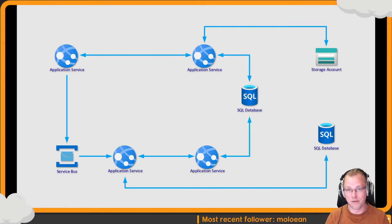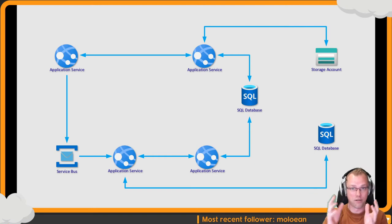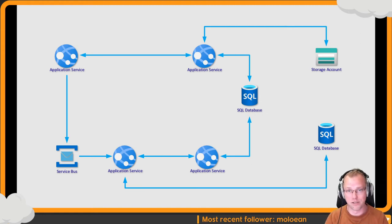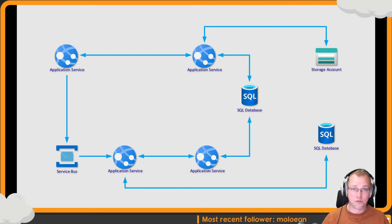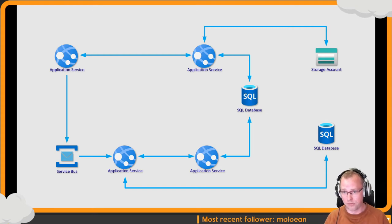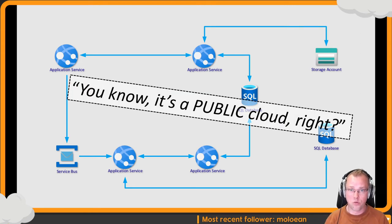I'm not very happy with this kind of design because it's what I call a 'distributed ball of mud' — you can look it up on Wikipedia, it's an actual thing. Instead of having classes calling other classes in your own process, you now have services calling services over HTTP, which is slower than having multiple objects in memory. And when customers show me this picture, the first thing I ask is: do you know Azure is a public cloud? If you haven't done something to secure your services, everyone will be able to connect to them.